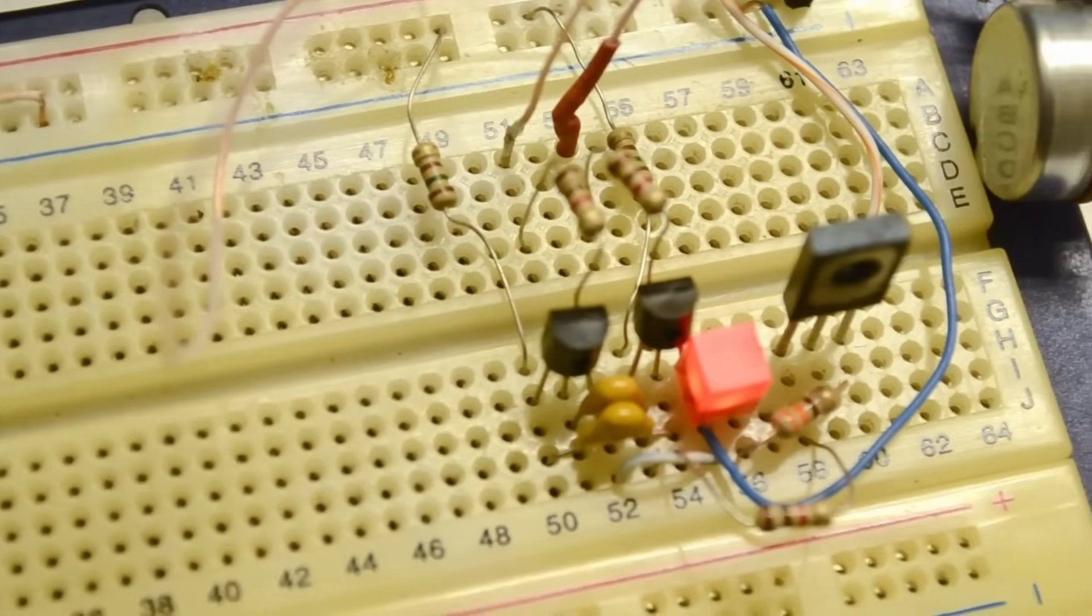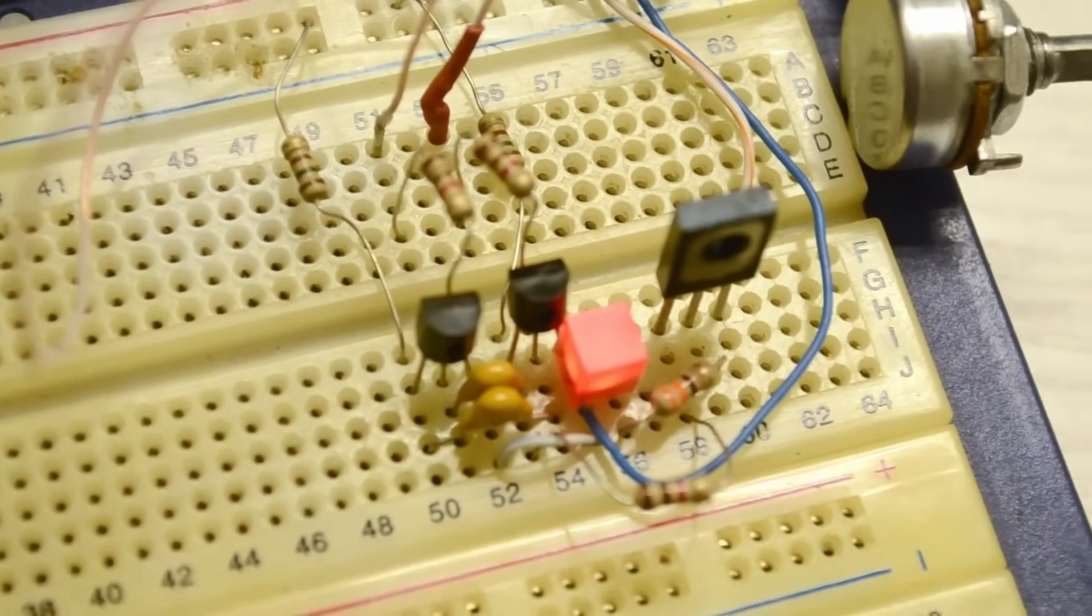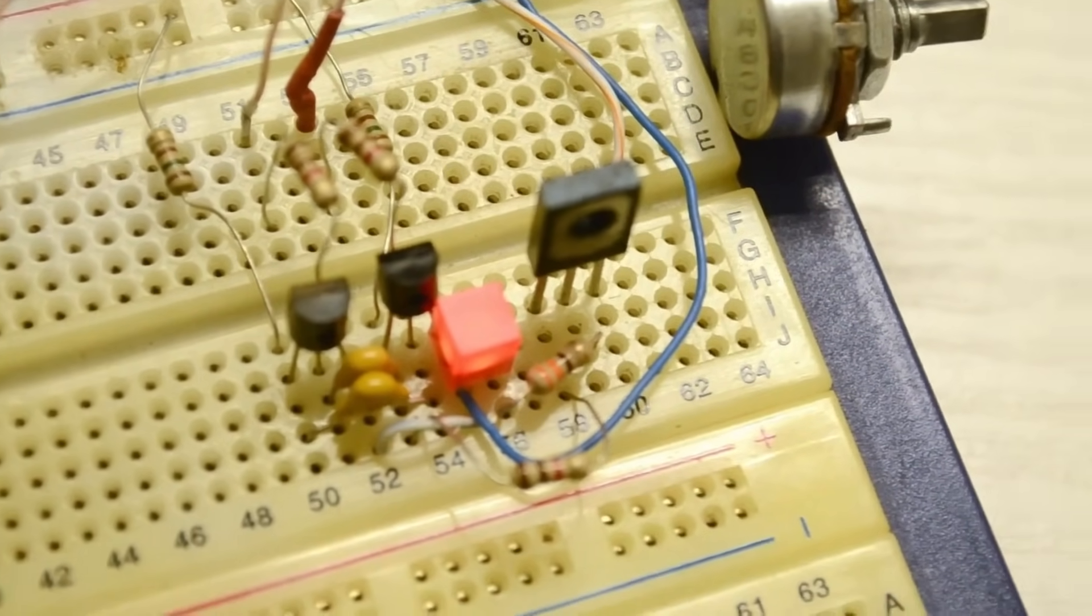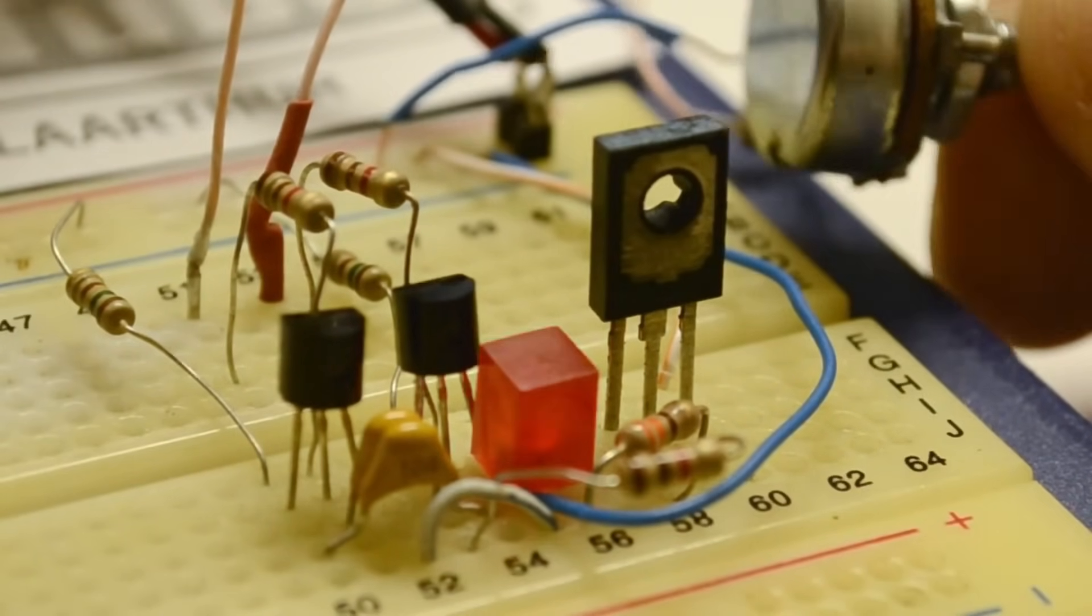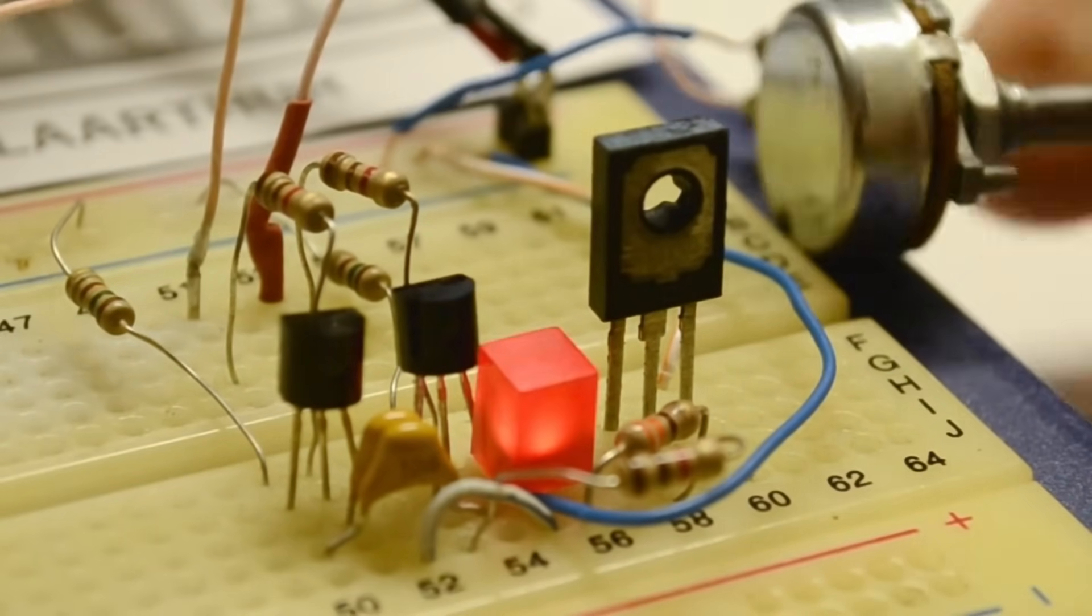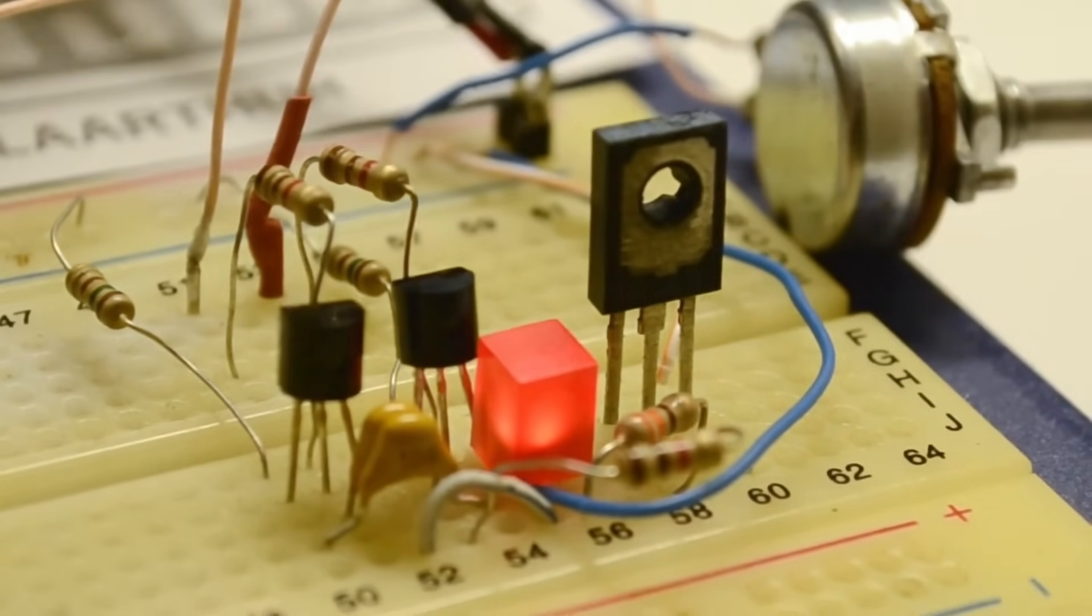The video was prepared especially for the AK Cassian channel. Greetings, friends. In amateur radio practice, the task of regulating the power of a DC load often arises, for example, the brightness of an LED strip or the rotation speed of a fan.